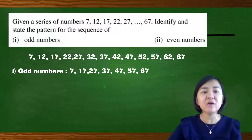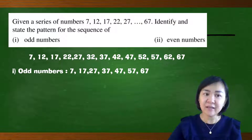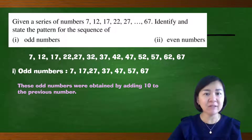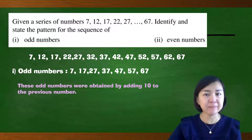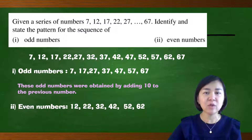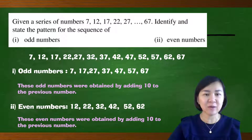From the list of odd numbers — 7, 17, 27, 37, 47, 57, 67 — can you see the pattern? Yes, we can determine the next numbers by adding 10. Therefore, the pattern is: these odd numbers were obtained by adding 10 to the previous number. For even numbers, listing them out gives 12, 22, 32, 42, 52, and 62. The pattern is the same — adding 10 to the previous number.